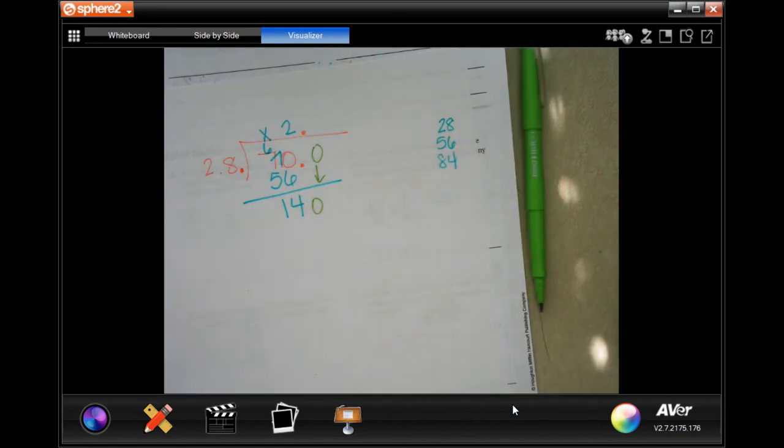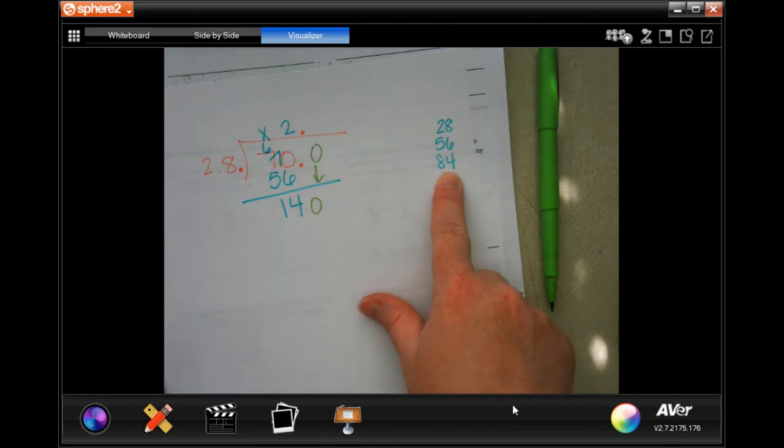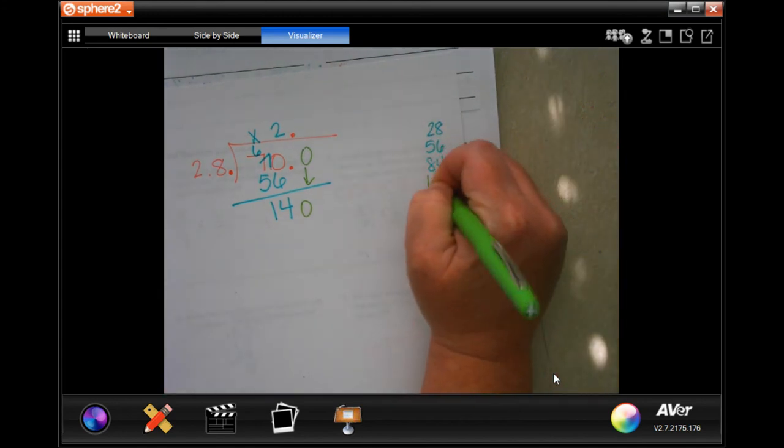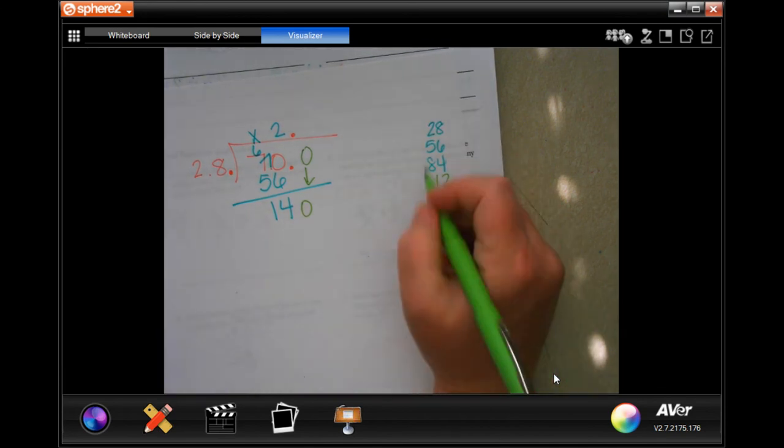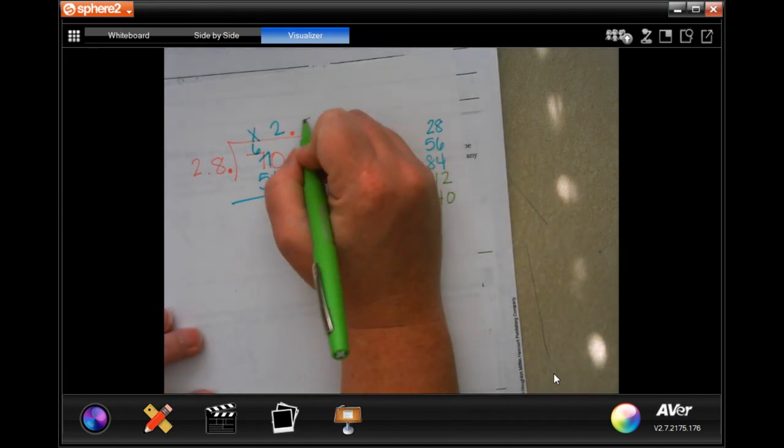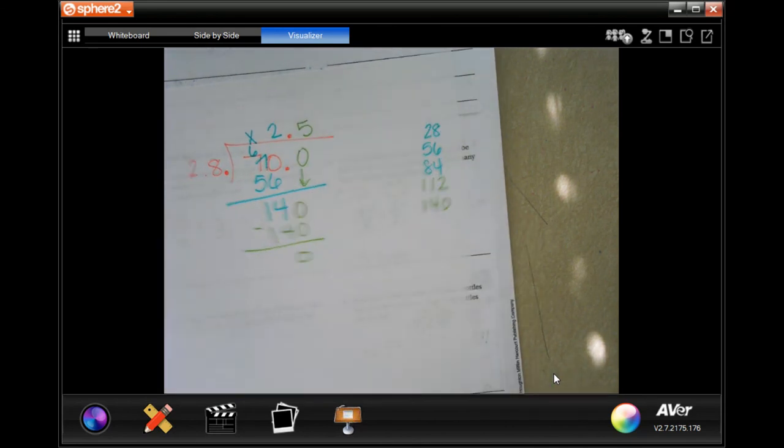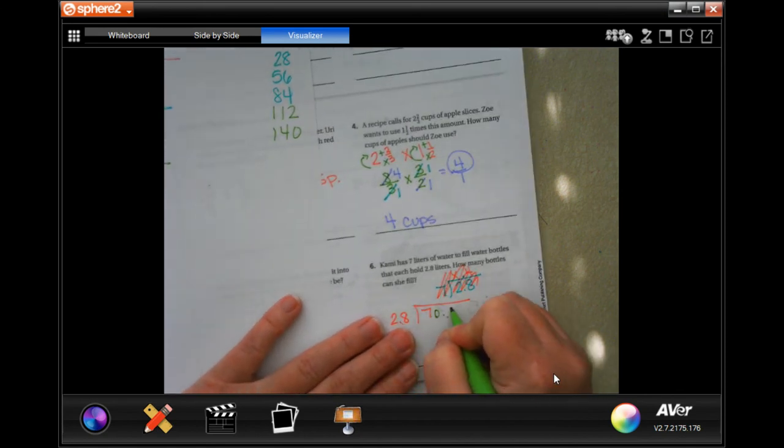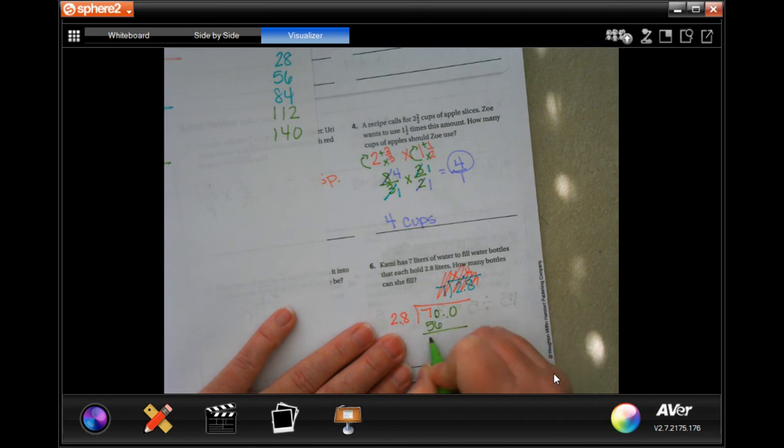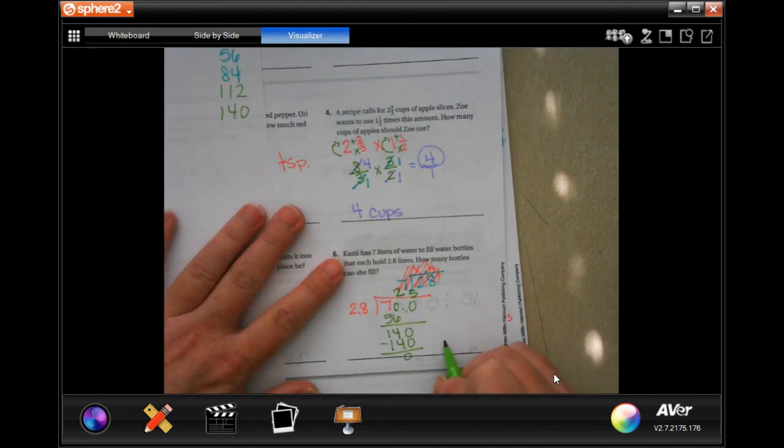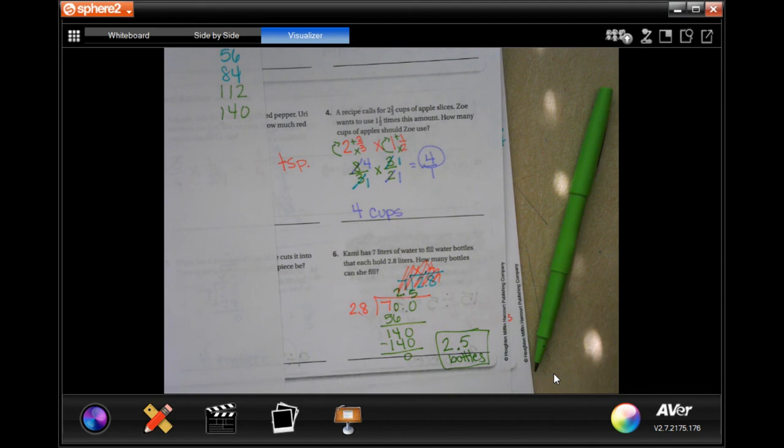Now, I know that 3 times 28 is 84, but I can go way higher than that. So, I'm going to try 28 times 4, which is 112, and 28 times 5, which is 140. Look at that. So, 5, 5 times 28 would be 140. Subtract. It's 0. So, 2.5. Make sure that you come back and write down your work. Even if you have to do another piece of paper, make sure that you come back. So, she can fill 2.5 bottles. Sometimes those word problems trip me up, too.